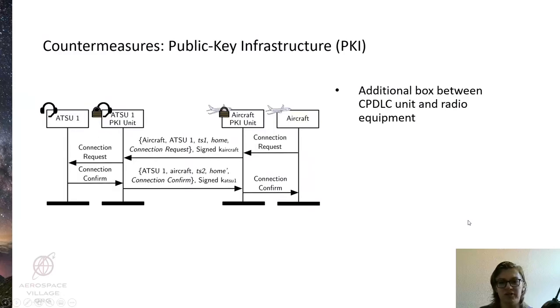A more robust countermeasure that we propose involves adding a public key infrastructure or PKI system to the CPDLC protocol. This comes in the form of an additional box between the CPDLC unit and the radio antennas. This box stores a private-public key pair for the aircraft or ATSU in question, alongside the public keys of other units in the network.